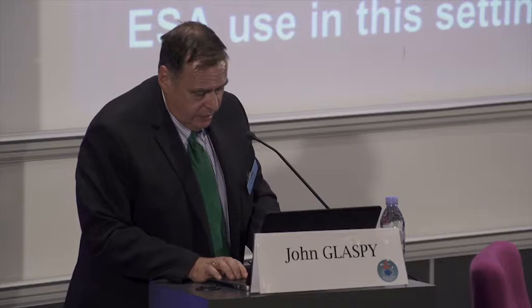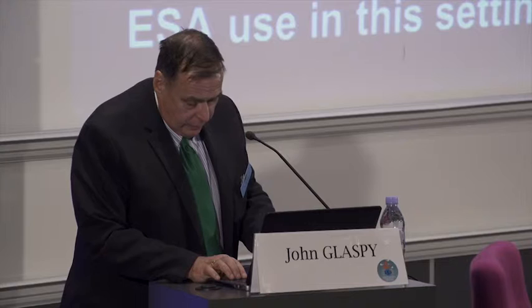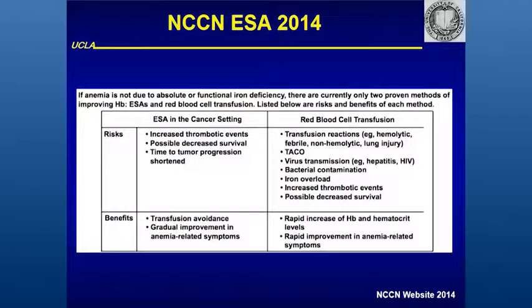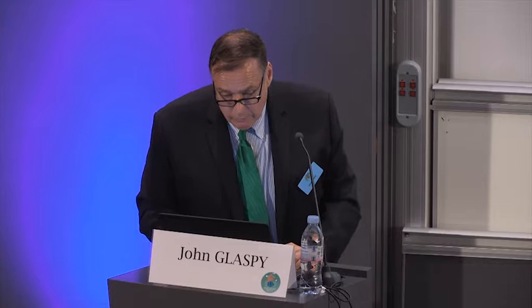They request a reduction in dose if the patient has a rapid response, stop if the patient doesn't respond, and for iron, they clearly lay out the data and are much more supportive of it than the ASH-ASCO guidelines. Their list of risks and benefits of ESAs — this possible decrease in cancer survival remains in the 2014 NCCN guidelines, and it's clear that the risk-benefit here doesn't involve quality of life or relief of fatigue. It involves balancing the risk of transfusions against the risk of ESAs — two negative things being weighed against each other.